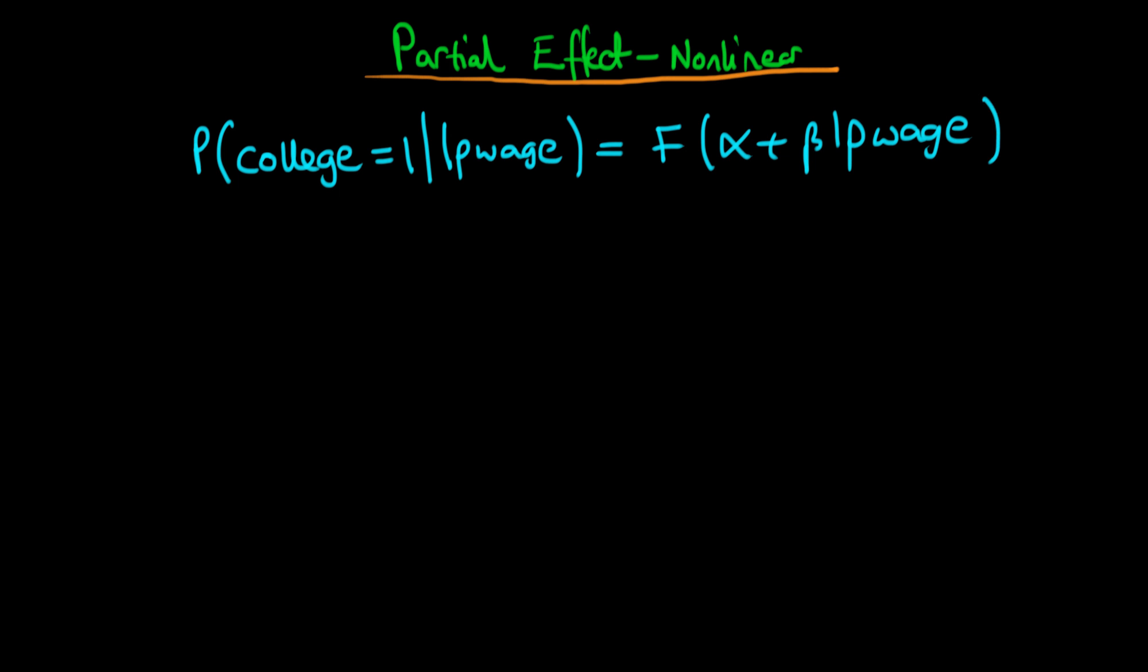And we spoke about the two particular examples of F, one being the case of the probit model, whereby F is actually capital Phi, where capital Phi represents the normal CDF. And we also spoke about the case of the logistic model, where here F is represented by the logistic transform.